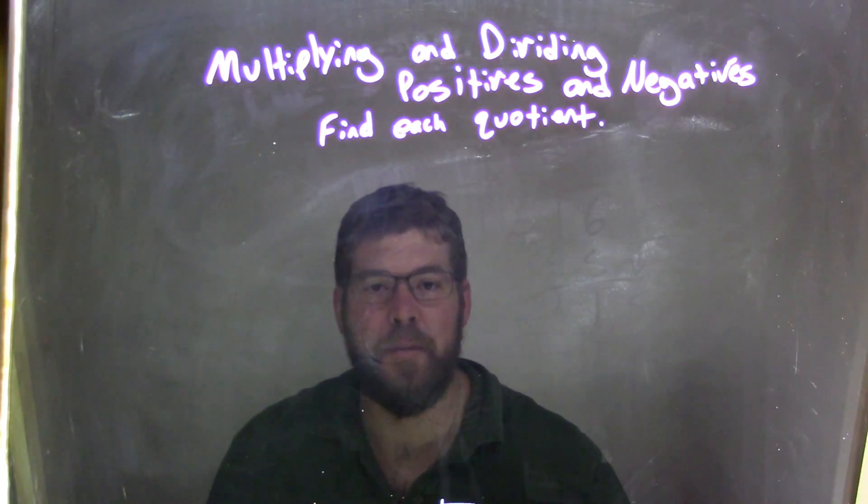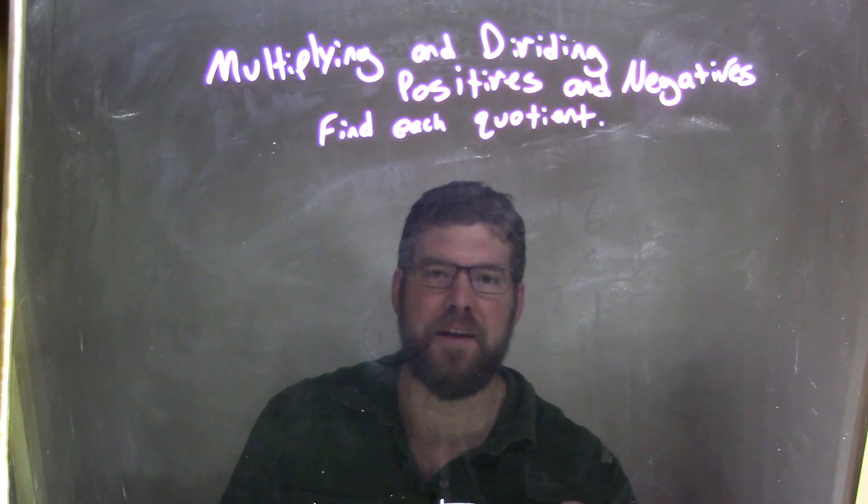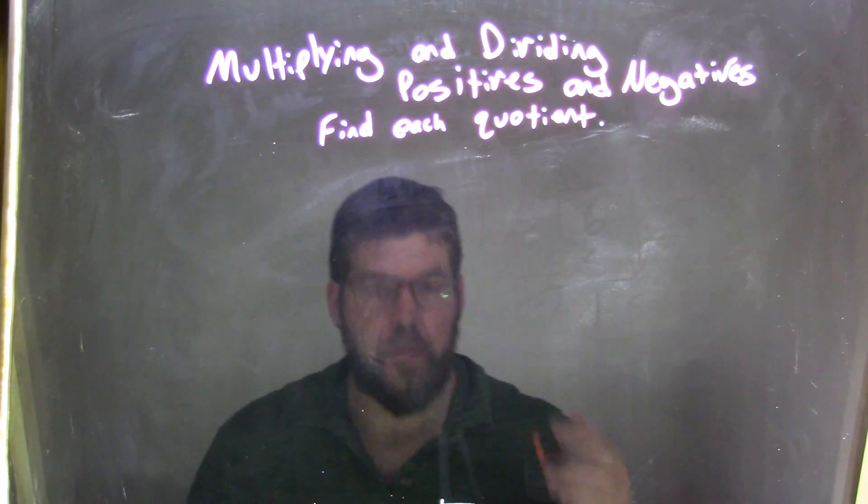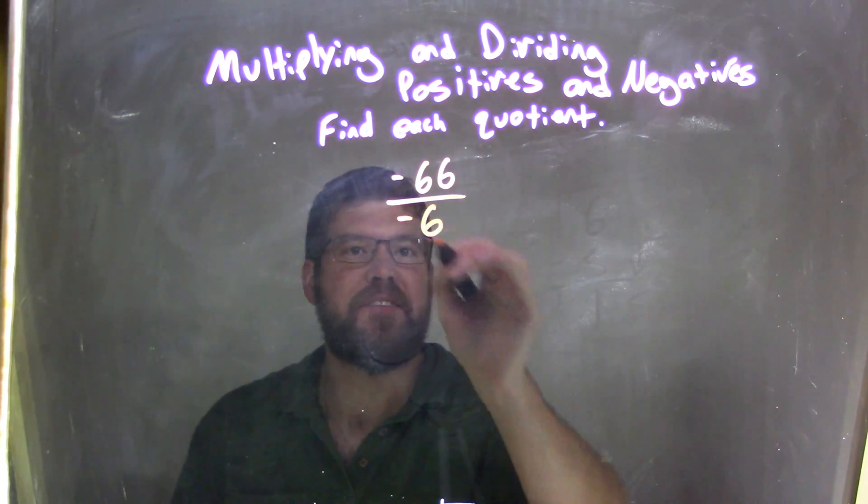Hi, I'm Sean Gannon, and this is MinuteMath. Today we're going to learn about multiplying and dividing positives and negatives, and we want to find each quotient. So if I was given this quotient, negative 66 over negative 6, okay?